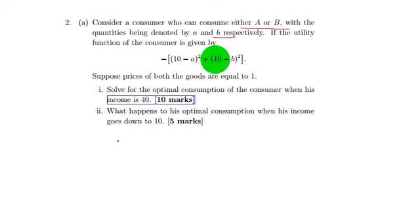If the utility function of the consumer is given by 10 minus A square plus 10 minus B square, suppose prices of both the goods are equal to 1.